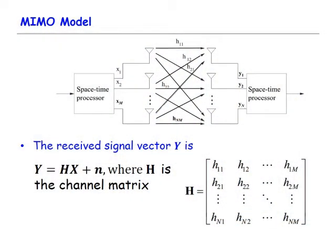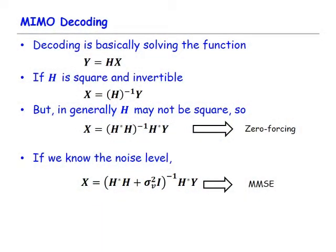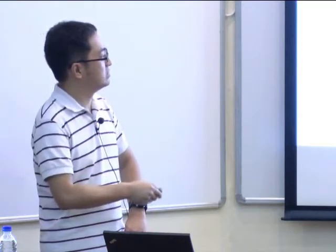Zero forcing works by zeroing out all self-interference to get the desired signal stream. We can do better if we know the noise level. In zero forcing, the noise is not considered during decoding. But if we know the noise level, we can handle it by changing the decoder to the MMSE estimator: the decoder becomes the inverse of (H^H * H + noise * I) * H^H. This is called MMSE — a better decoding mechanism when we account for the noise level.